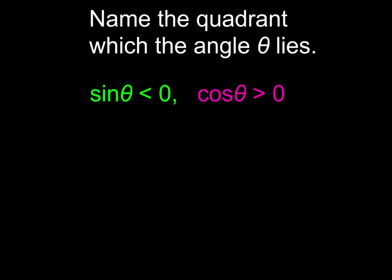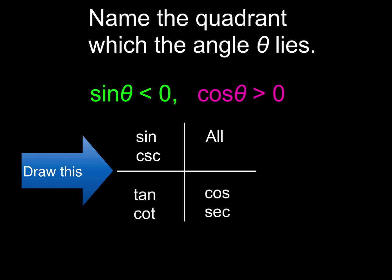So here's a typical problem that you'll see in a math textbook. Name the quadrant which the angle theta lies. It's a game of where am I, where's theta. We've got two conditions here. And what we're going to do is see which quadrant meets both of those conditions. Sine theta is less than zero. Cosine theta is greater than zero. So here's the first thing that you're going to do: Draw this chart.